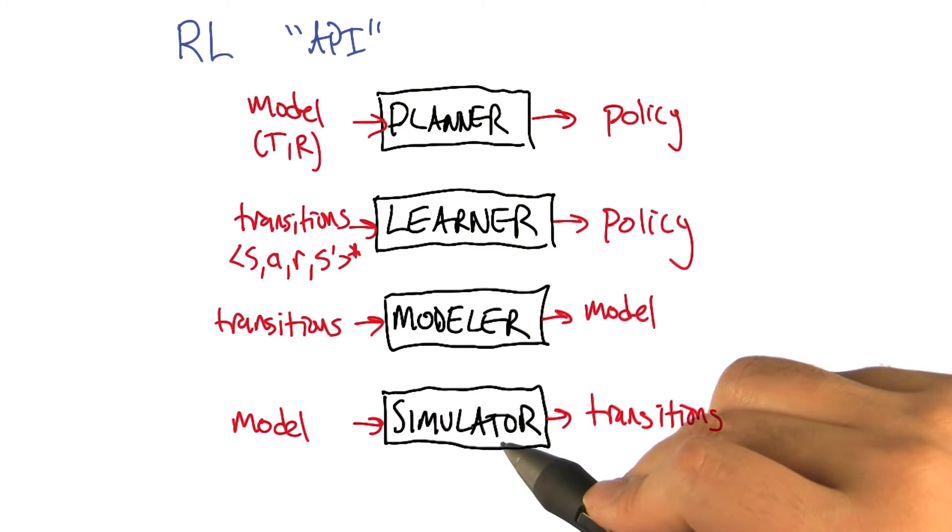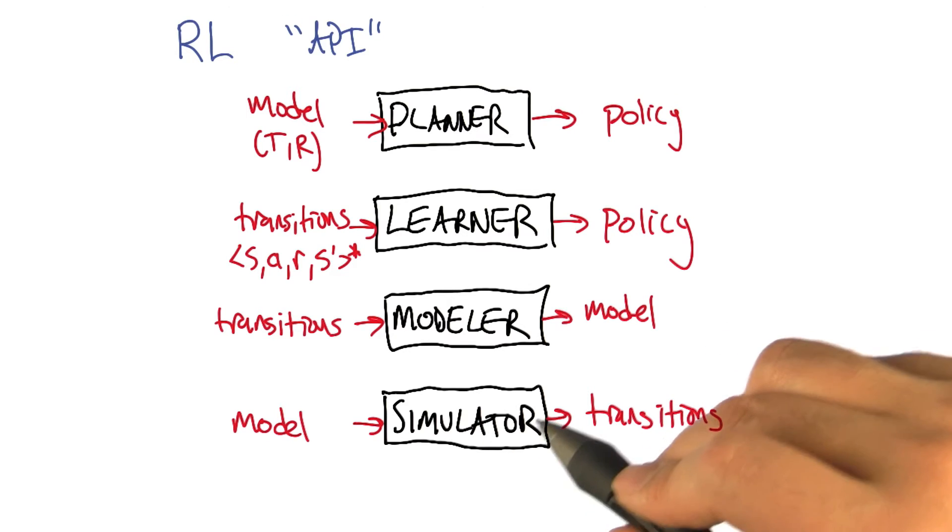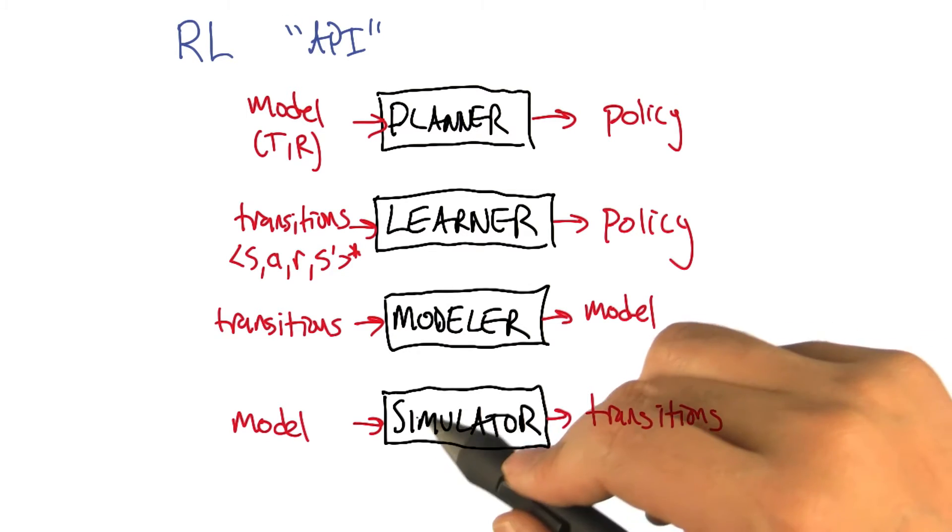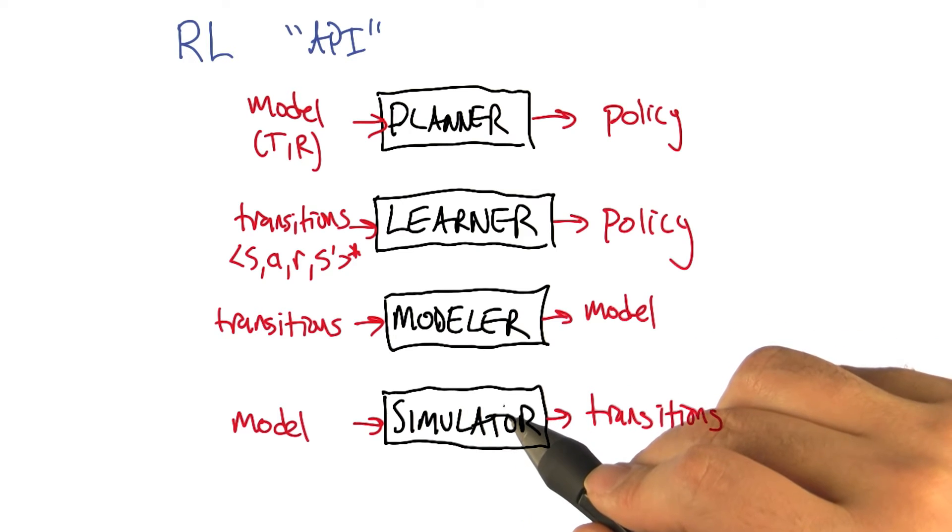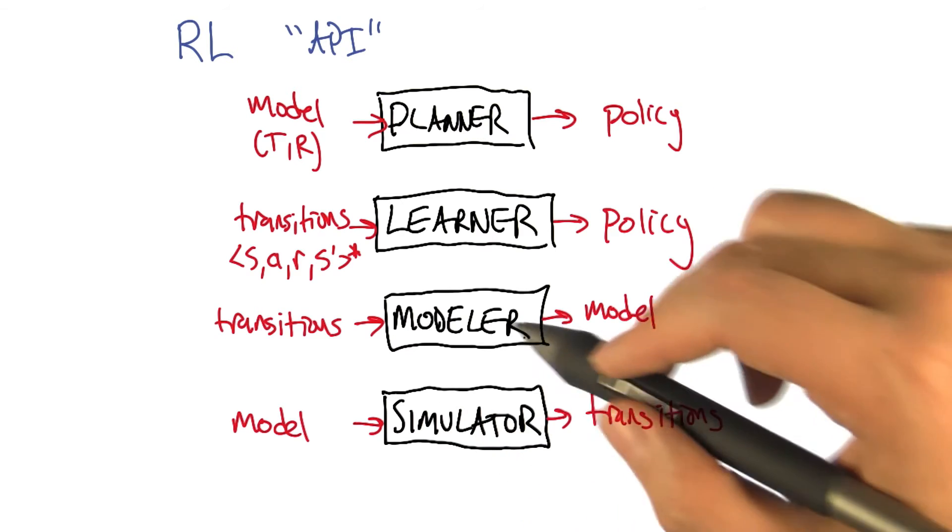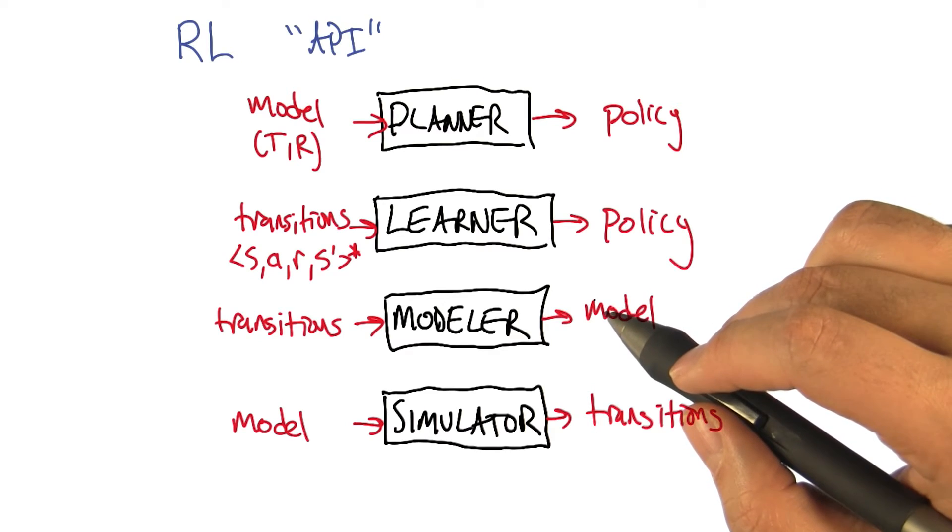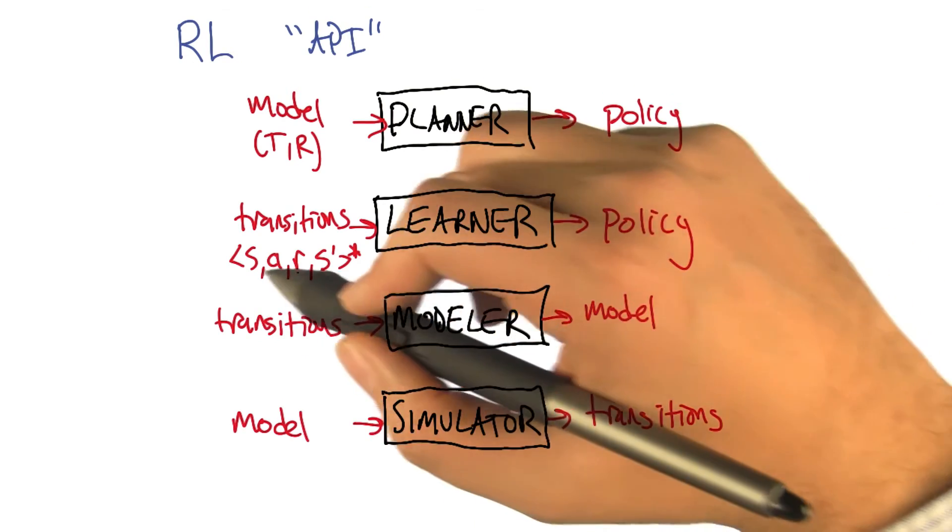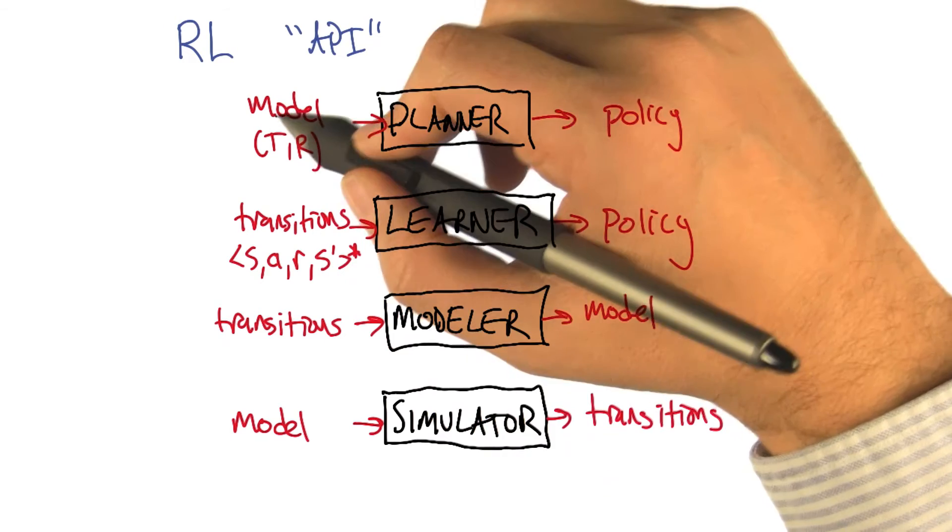This is generally not a very hard thing to do, though there are certainly applications of reinforcement learning where this simulator is extremely expensive because it's simulating a lot of things in the world. And this modeling problem, you can think of as a kind of machine learning problem - trying to map this kind of information into models.